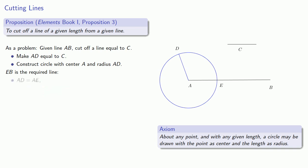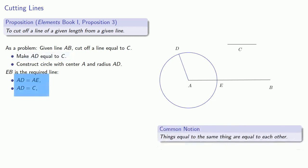And that's because AD is equal to AE because they're both radii of the same circle. AD is equal to C. Things equal to the same thing are equal to each other, so AE is equal to C. And so EB is the line AB with the line C removed.